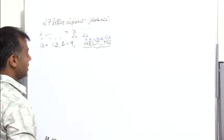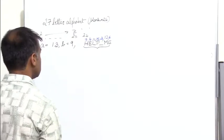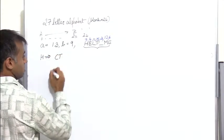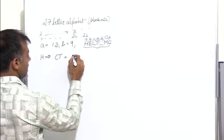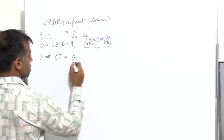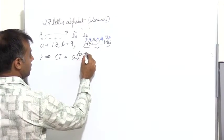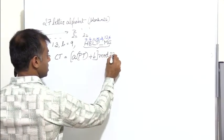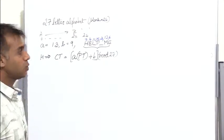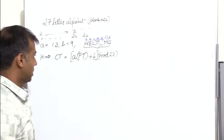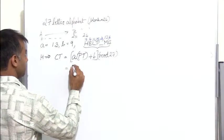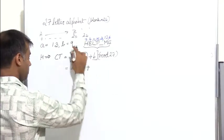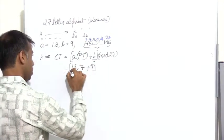To get the ciphertext, the expression is: ciphertext c equals a into plaintext alphabet plus b in mod 27. Why mod 27? Because we have 26 alphabets plus a blank. So for h, I compute 13 into 7 plus 9 in mod 27, which gives me 100 mod 27 = 19, corresponding to the alphabet t.